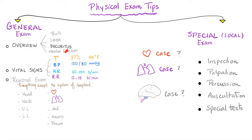Let's talk about the decubitus. What if the patient is lying down comfortably in bed? This is normal — yes, it could be normal. But it could also be platypnea. Platypnea is dyspnea when you sit up, but when you lay down, you're comfortable. So it could be platypnea, or it could be a normal person.